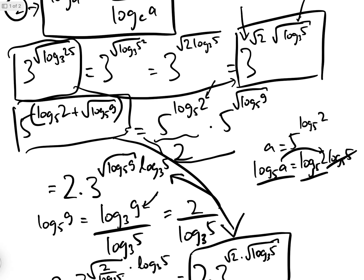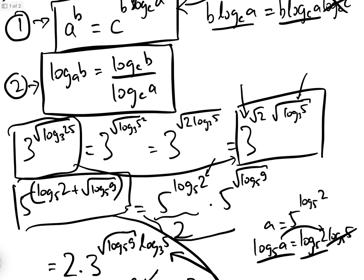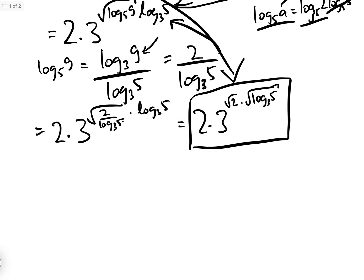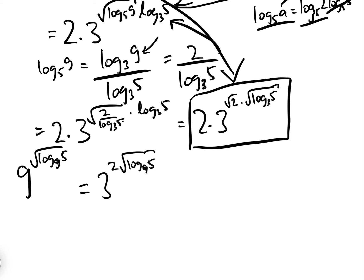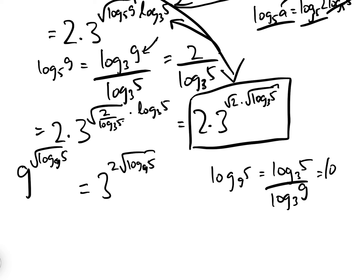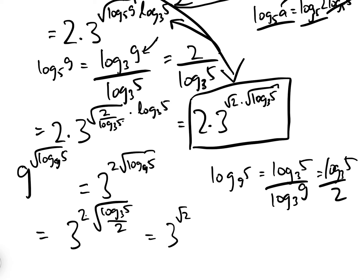The third term is 9^(√(log_9(5))). We write 9 as 3², giving 3^(2·√(log_9(5))). Converting log_9(5) to base 3 using formula 2: log_3(5) / log_3(9) = log_3(5) / 2. So the exponent becomes 2·√(log_3(5)/2), which simplifies — since 2/√2 = √2 — to √2 · √(log_3(5)). So the third term is 3 to the power of √2 · √(log_3(5)).